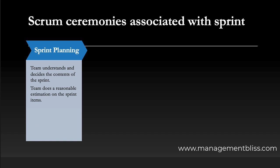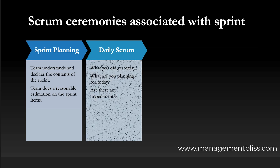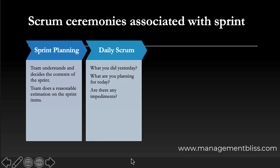Next is the daily scrum. Once the sprint starts, the team meets daily for a minimum duration to discuss how things are going and if any impediments need to be resolved. These daily scrum meetings are there to talk about what you did yesterday, what you are planning for today, and whether there are any impediments.